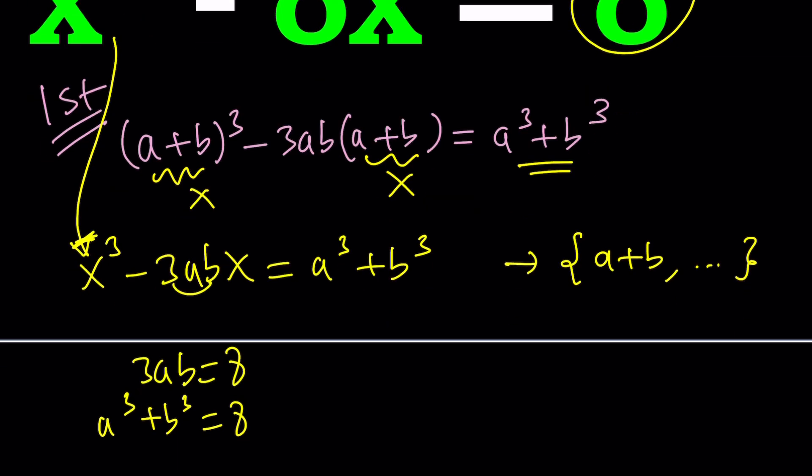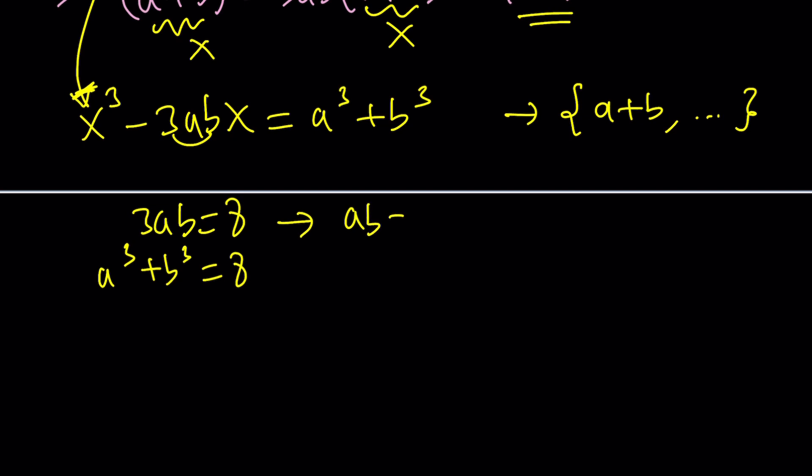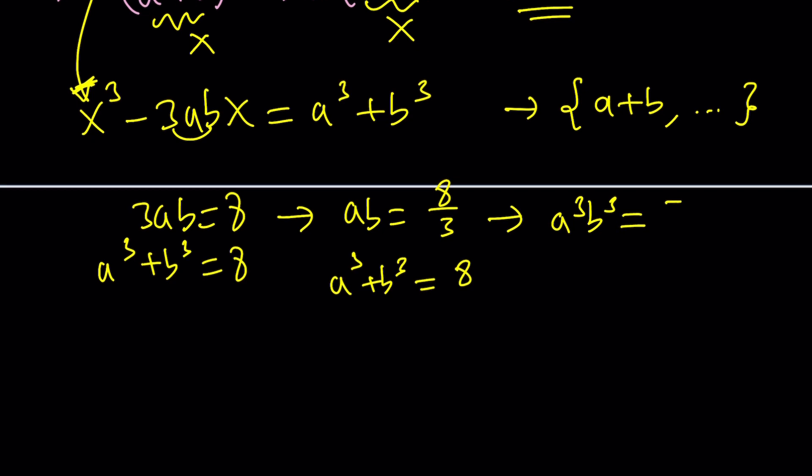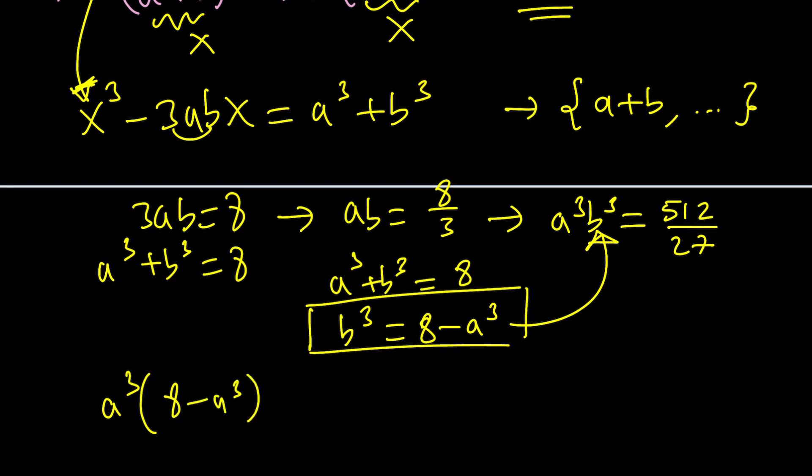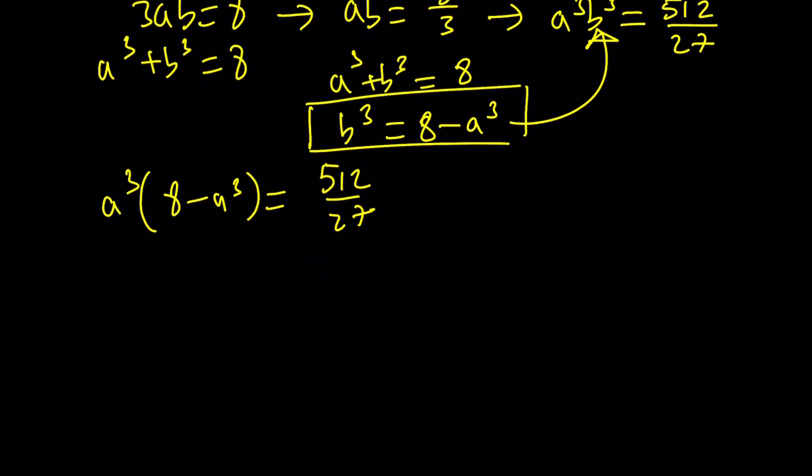That looks like a cubic system but it's indeed quadratic because if you cube both sides here, a³b³ is going to give you 8³, that's 2⁹ which is 512, and 3³ is 27. Now you can isolate b³ and write it as 8 - a³. This is something you can substitute here which will give you a³(8 - a³) = 512/27. Notice when you distribute you get a³ and a⁶. So by setting a³ equal to something like c you can get a quadratic equation.